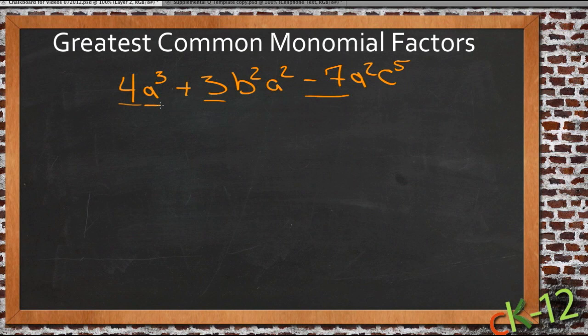But this first term has three a's, a times a times a, so a³. The second term has two a's, a times a, and the third term has two a's. So I can actually pull out an a² this time.